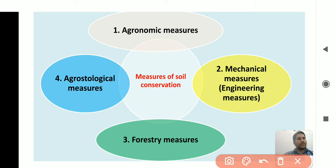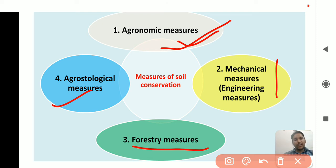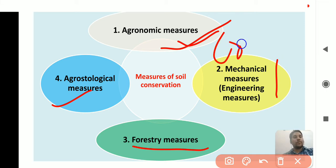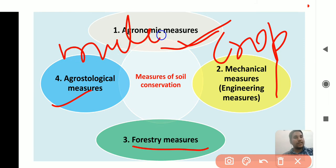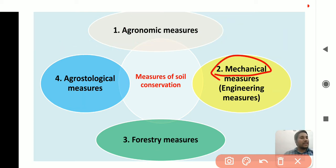So how do we reduce soil loss by different cultural measures? These include agronomic measures, mechanical measures, forestry measures, and agrostological measures. Agronomic measures means applying different agricultural practices without the loss of soil, like sowing of cover crops, crop rotation, mulching, and different scenarios to reduce soil loss.